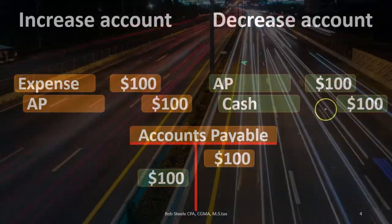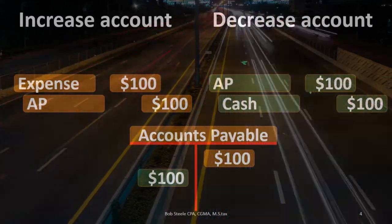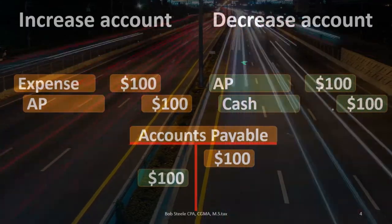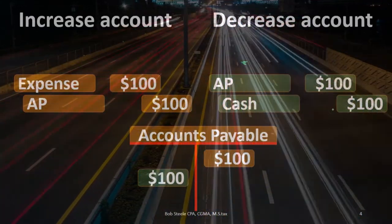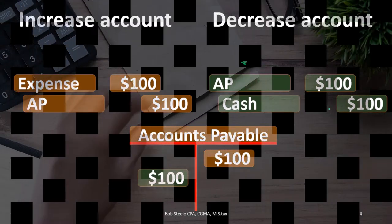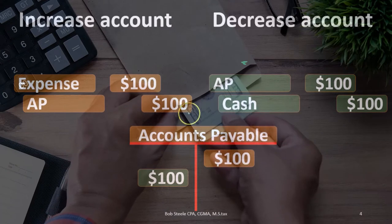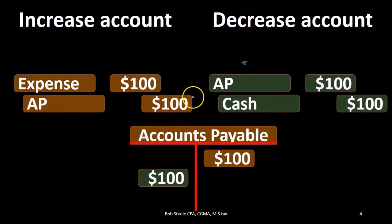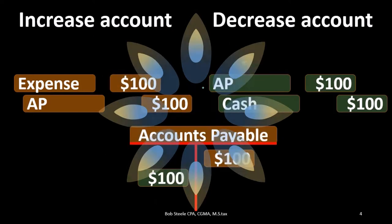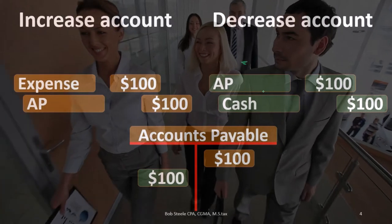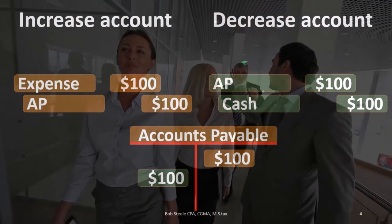If on the other hand accounts payable went down, then in aggregate, the payment transaction happened more — cash went out. The other side being accounts payable is not an expense, so we're not recording the net income impact at this point. That's why when accounts payable goes down, we record a decrease in the cash flow statement. We're essentially recording the expense on a cash basis at the point in time cash was spent.